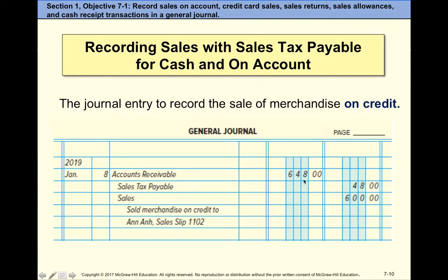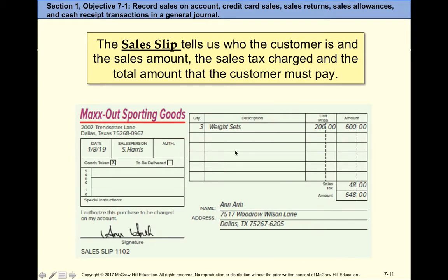This is the same example but instead of receiving cash we are recording a sale on account — $600 merchandise sold plus sales tax. Accounts receivable is debited for the total, because the customer owes us both the amount of the sale and the sales tax. For example, on a sales slip, the customer bought weight sets for $600 plus sales tax, so accounts receivable is $648, which includes $48 of sales tax.